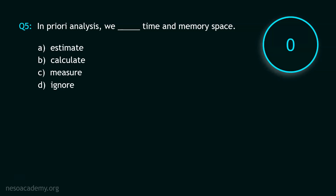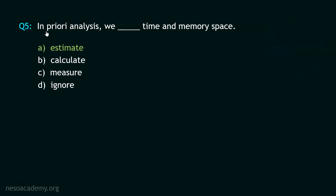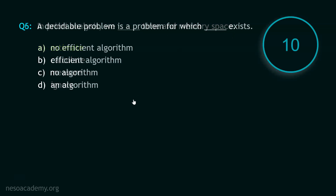And your time starts now. Stop! The correct option is option A. Estimate. In priori analysis, we estimate time and memory space. Now let's move to question number 6.